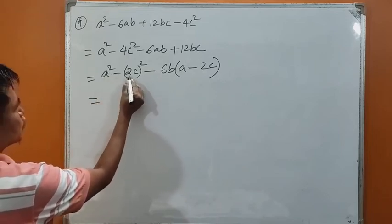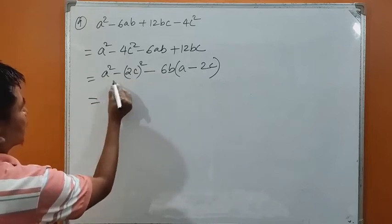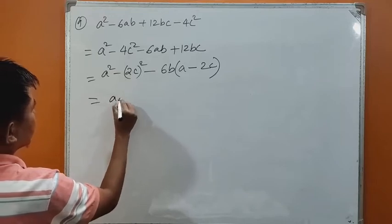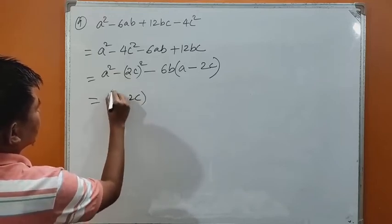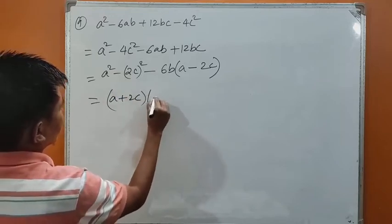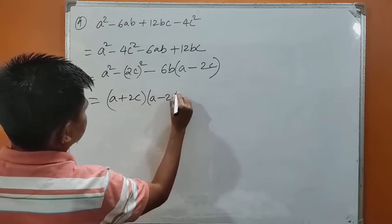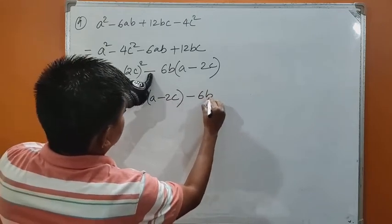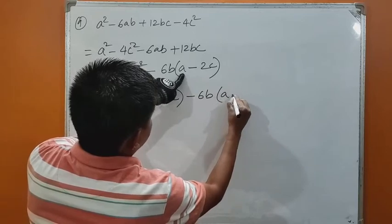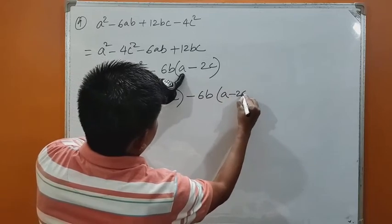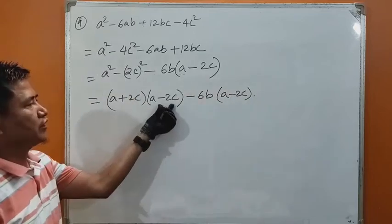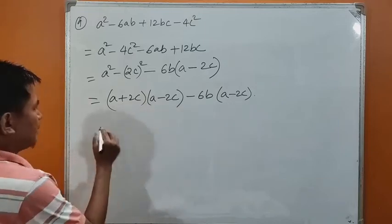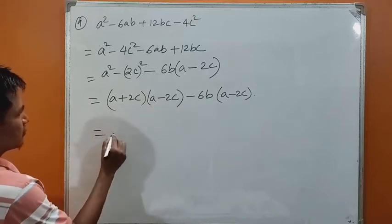Now this is a squared minus 2c squared — which is b squared. And a squared minus b squared equals a plus b whole times a minus b. So we have a minus 2c within the bracket: a plus 2c times a minus 2c. We have a minus 2c common — let us take out that common factor.